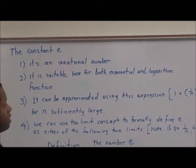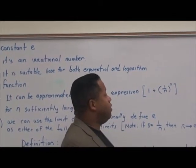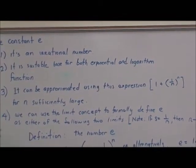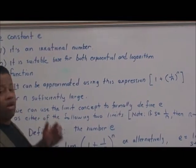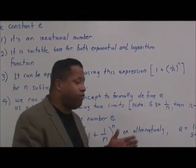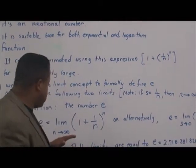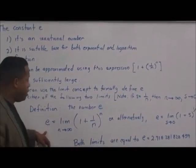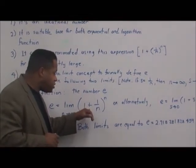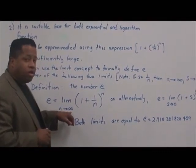It can be approximated using the expression 1 plus 1 over n to the n power, where n is a sufficiently large number. We can use the limit concept to formally define e: e is equal to the limit of (1 + 1/n)^n as n approaches positive infinity.